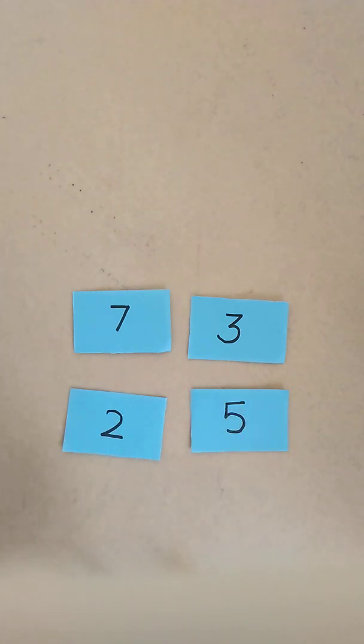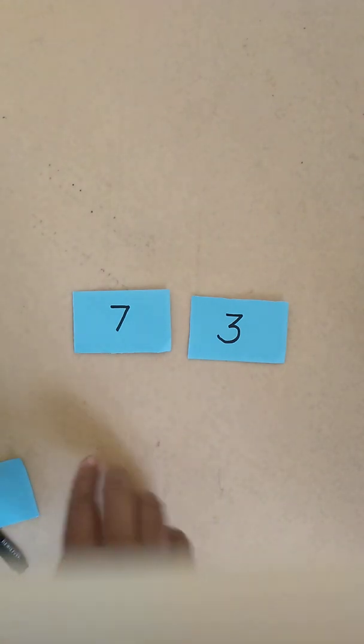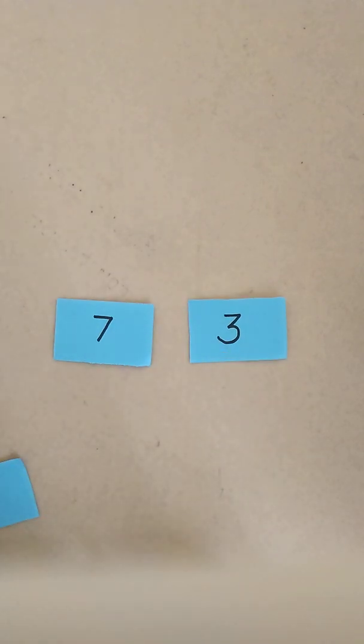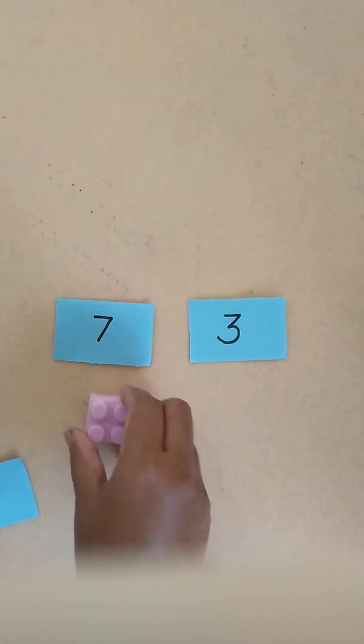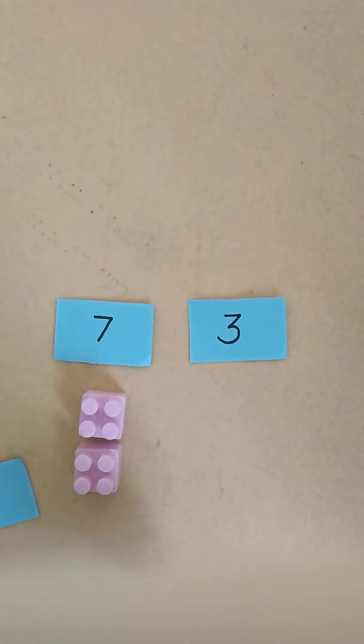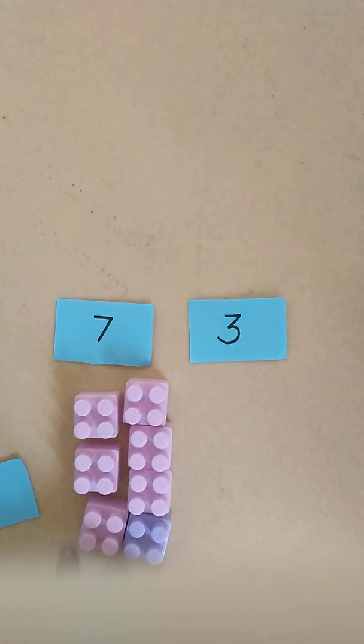So now if you ask a child which is bigger, 7 or 3, the child might find it difficult because for him these are just numbers. So now we are going to associate this number with quantity. Shall we start counting 7 puzzles? 1, 2, 3, 4, 5, 6, 7. So here we have 7 puzzles.